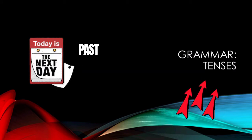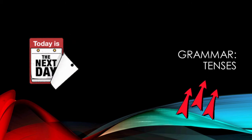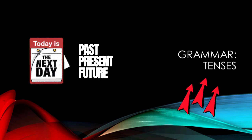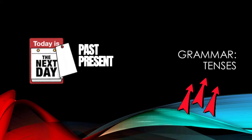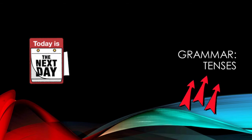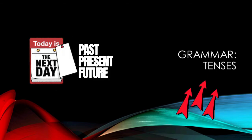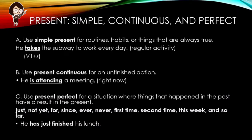Tenses adalah bentuk kata kerja dalam bahasa Inggris untuk menunjukkan waktu terjadinya suatu perbuatan atau peristiwa. Dalam video ini kita akan mengelompokkan tenses menjadi tiga waktu: present, past, dan future. Yang pertama adalah present — present akan kita bagi menjadi tiga kategori.